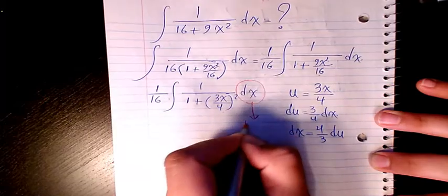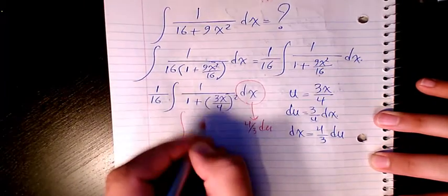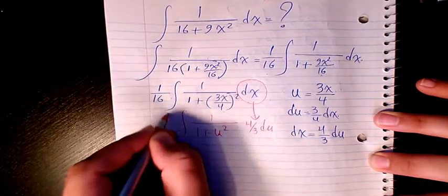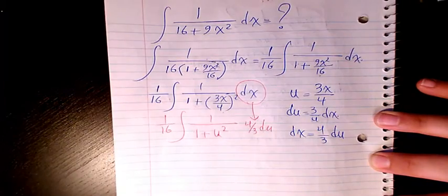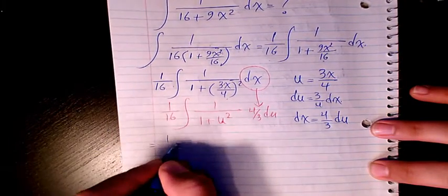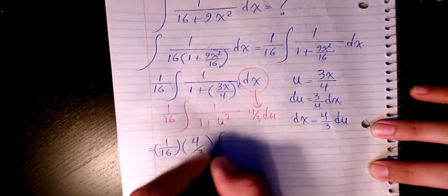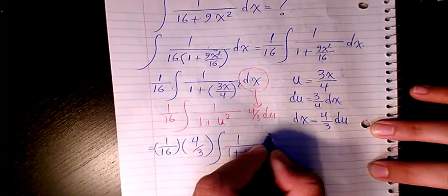4 over 3 du and here we have 1 over 1 plus u squared. And here we have 1 over 16, so that will change to 1 over 16 times 4 over 3, 1 over 1 plus u squared du.